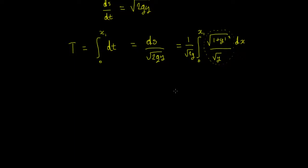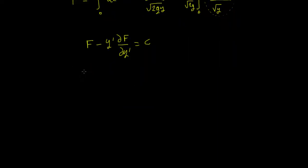From the calculus of variations, this functional is explicitly dependent on y and y', but there is no explicit dependence on x. So we can use the Beltrami identity, which states: f minus y' times (∂f/∂y') equals some constant c.